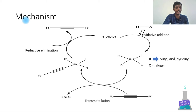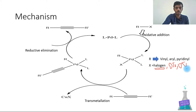The mechanism of Sonogashira coupling begins with palladium bearing two ligands. The first step is oxidative addition: the palladium with its two ligands reacts, and R — which may be aryl or vinyl — is attached along with the leaving group, which is normally a halogen. OTs or OTf can also be used as leaving groups.